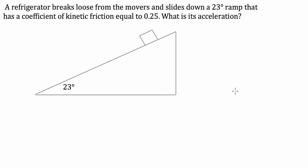Hi guys, this video is going to be about forces on an inclined plane. The question we're going to do is being given to me by one of my students, so let's get straight into it. We've got a refrigerator breaking loose from the movers and sliding down a 23-degree ramp that has a coefficient of kinetic friction equal to 0.25. What is its acceleration?